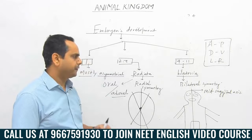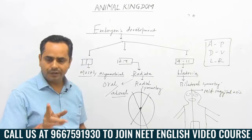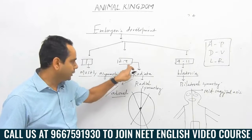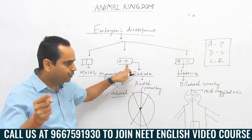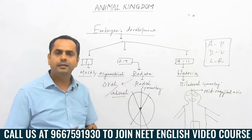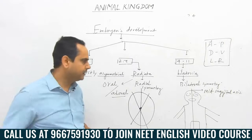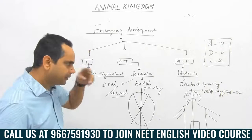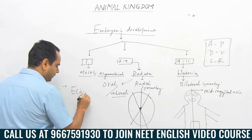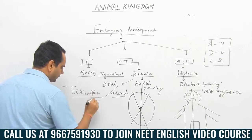Radiata includes two phyla: Coelentrata and Ctenophora. From Platyhelminthes to Chordata, the symmetry is called bilateral symmetry and the group is called Bilateria. But remember a few points here. One phylum — phylum number nine — is called Echinodermata.